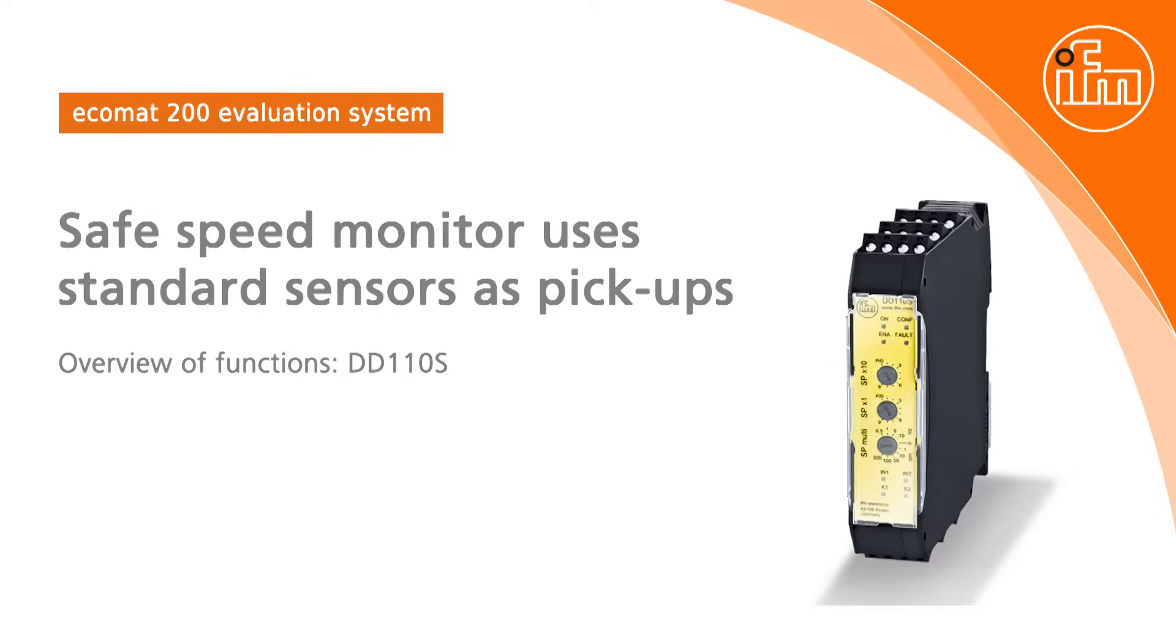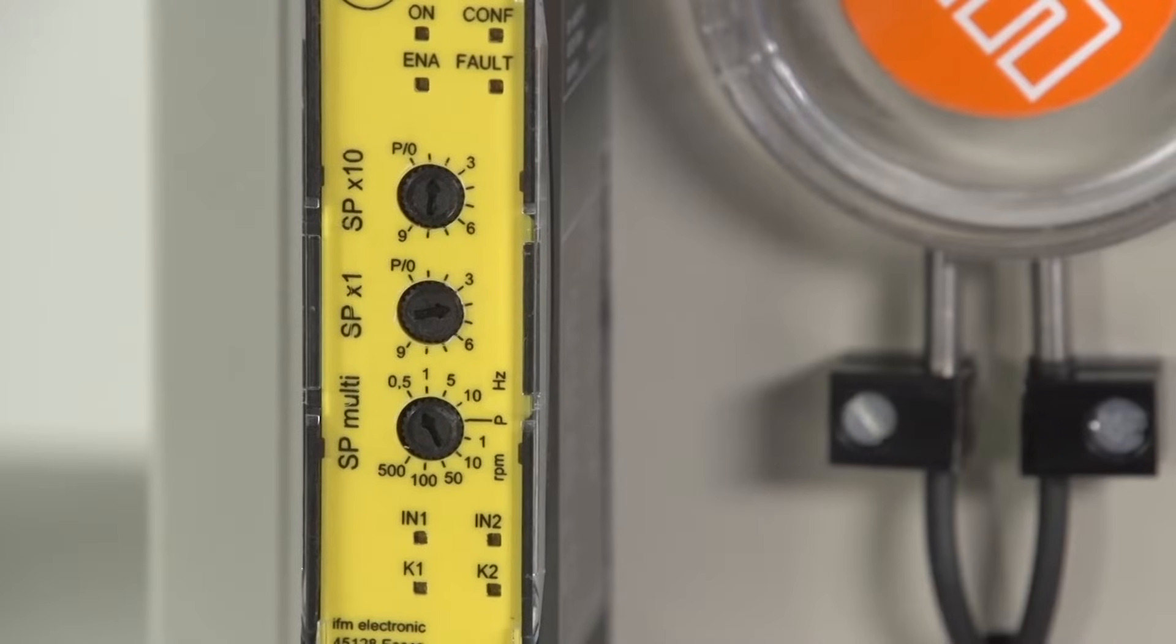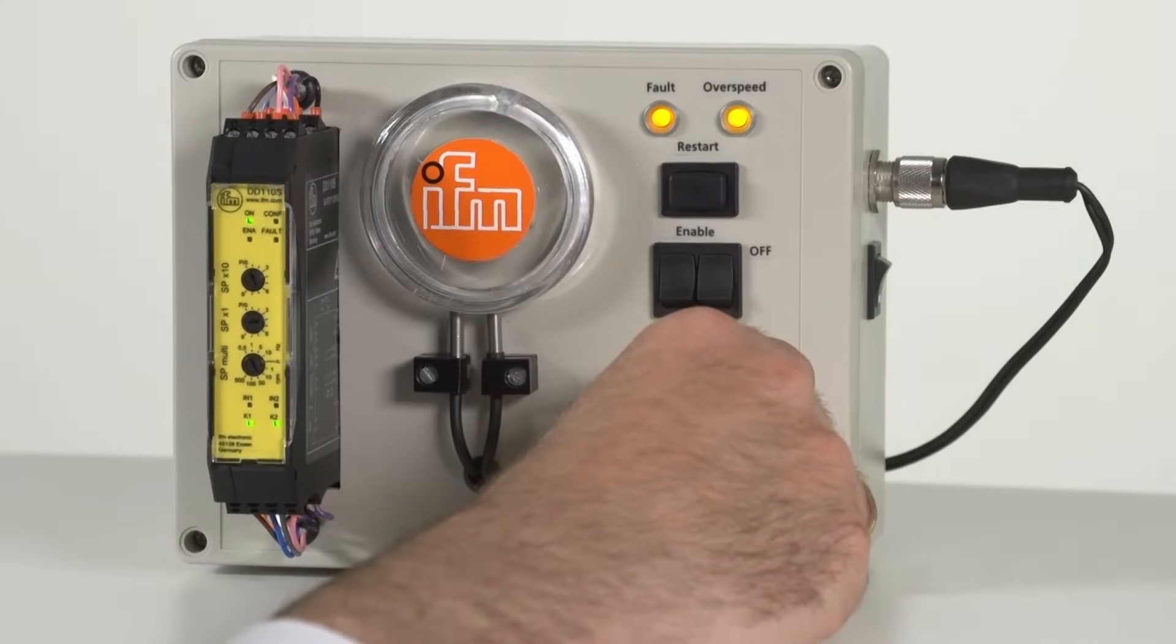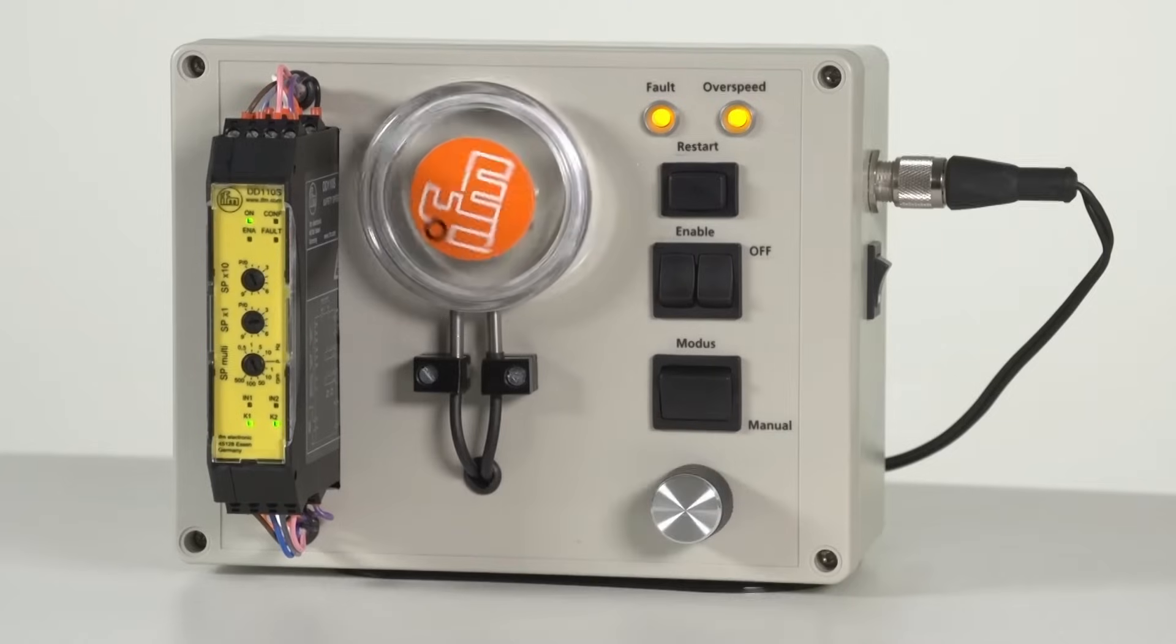The SAFE DD110S speed monitor monitors a machine for overspeed. The speed limit is set by three rotary switches. The machine speed is detected on two channels by two position sensors at the rotating shaft.